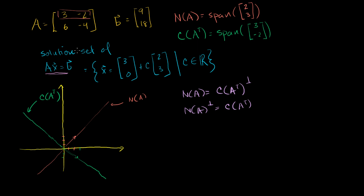Any vector in R² can be represented as the sum of a unique member of the row space and a unique member of its orthogonal complement, the null space. So if I pick an arbitrary point in R², I can represent it by going along the row space to get one vector, and then adding a vector from the null space direction. These two components add up head-to-tail to reach that arbitrary point. There you have it: an arbitrary point in R² represented as the sum of a member of the row space and a member of the null space.